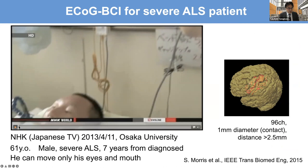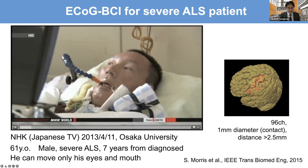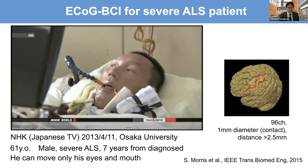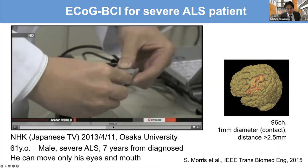Six years ago he was diagnosed with ALS, a disease that causes progressive degeneration of the muscles. He is a patient with severe paresis — he can only move his eyes and mouth, and normally communicates using mouth movements. We then implanted electrodes for him and had him try to control a robotic hand.